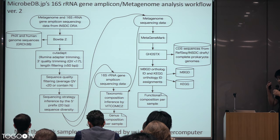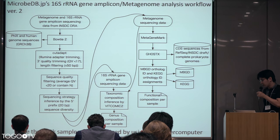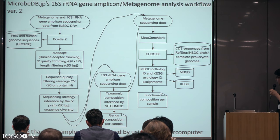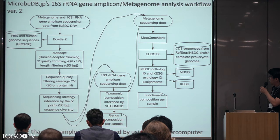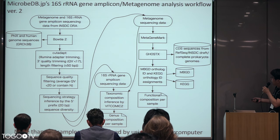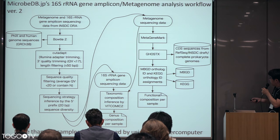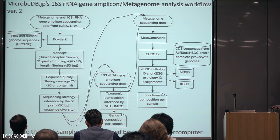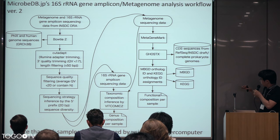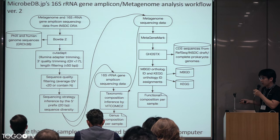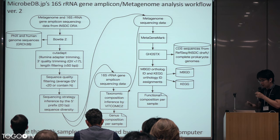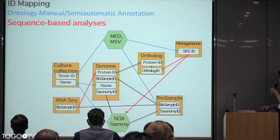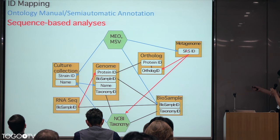For metagenomic data, there are already around 0.6 to 0.7 million samples in INSDC DRA. We downloaded all of this sequence data, ran the same analysis pipeline, and analyzed the taxonomic composition and functional composition of each sample using this pipeline on the NIG supercomputer. By using the same pipeline, we can compare samples across different researchers' data. After this sequence-based analysis, we can link metagenomic data to taxonomy and metagenomic data to orthologs.